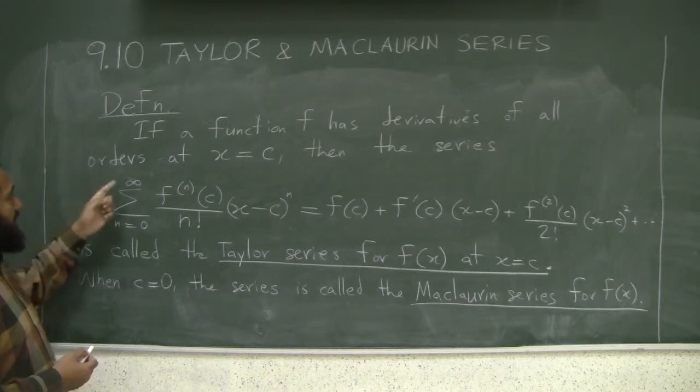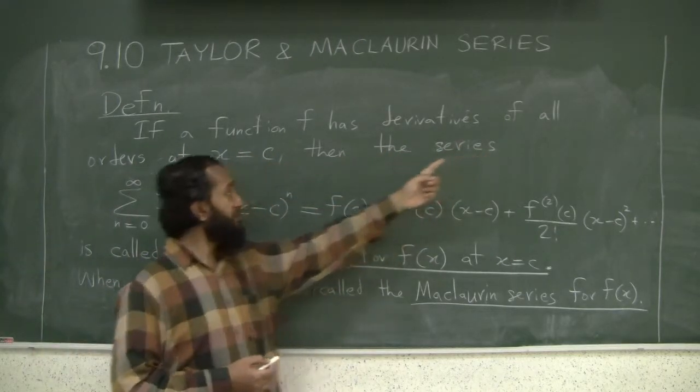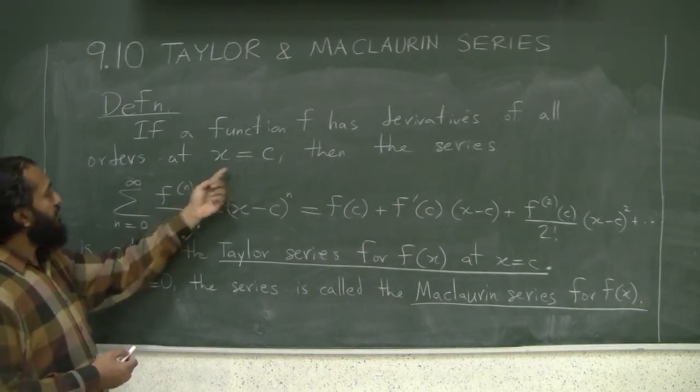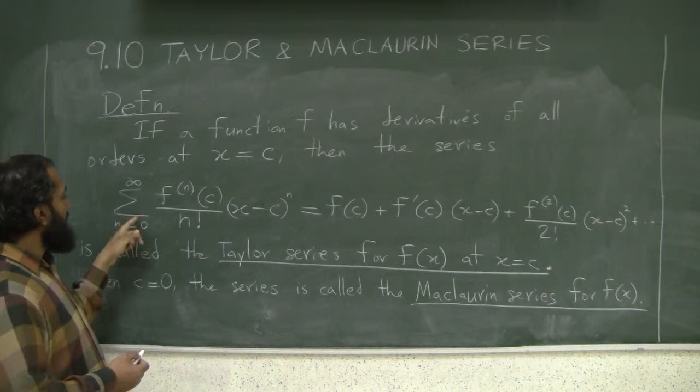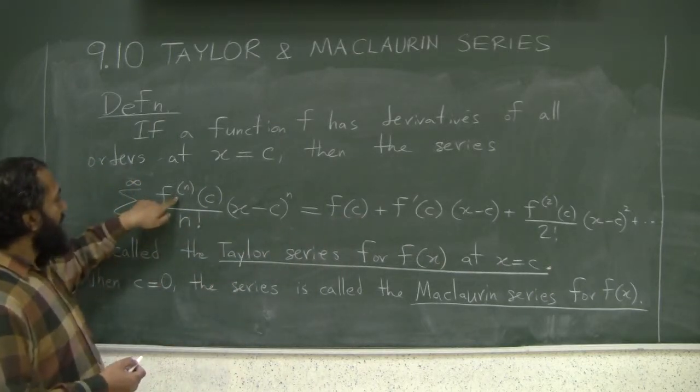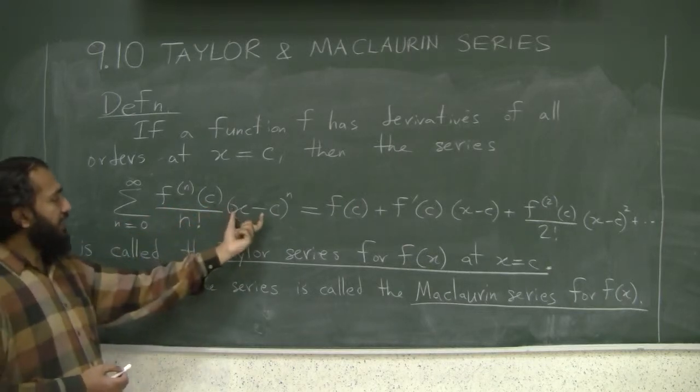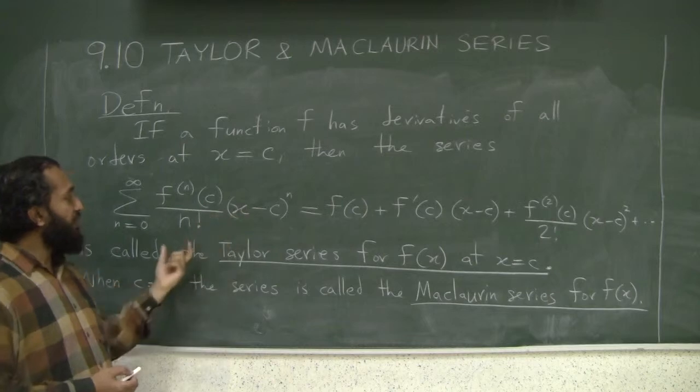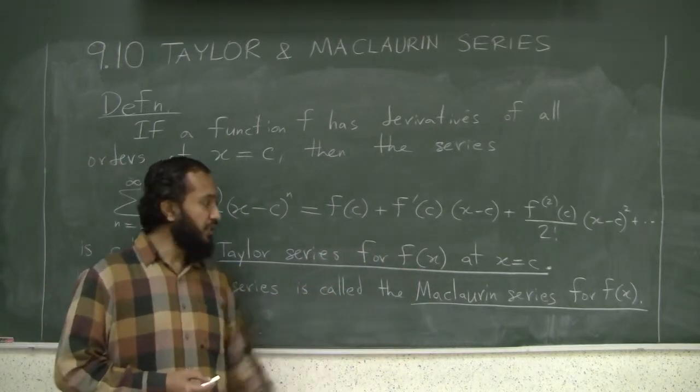The definition says if you have a function f which has all derivatives at x equals c, first, second, and so on, then the series made up by the nth coefficient—the nth derivative of f evaluated at c divided by n factorial times (x minus c) to the power n—this particular power series is called the Taylor series for f at x equals c.